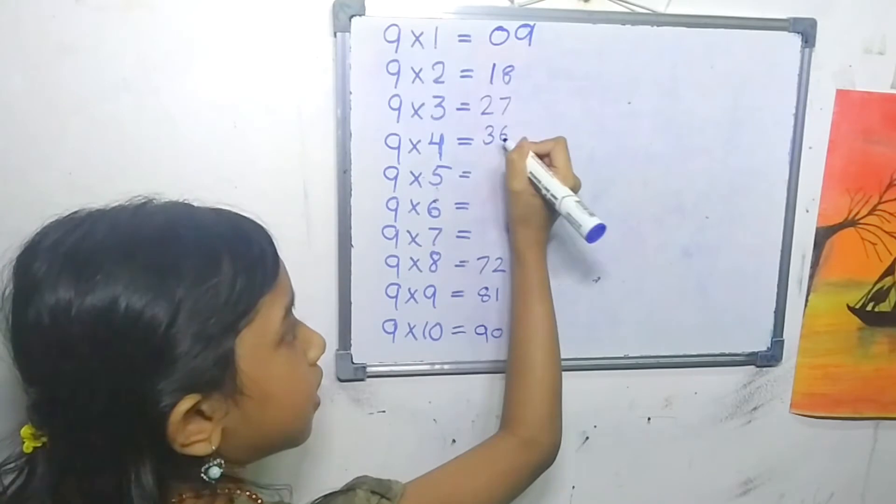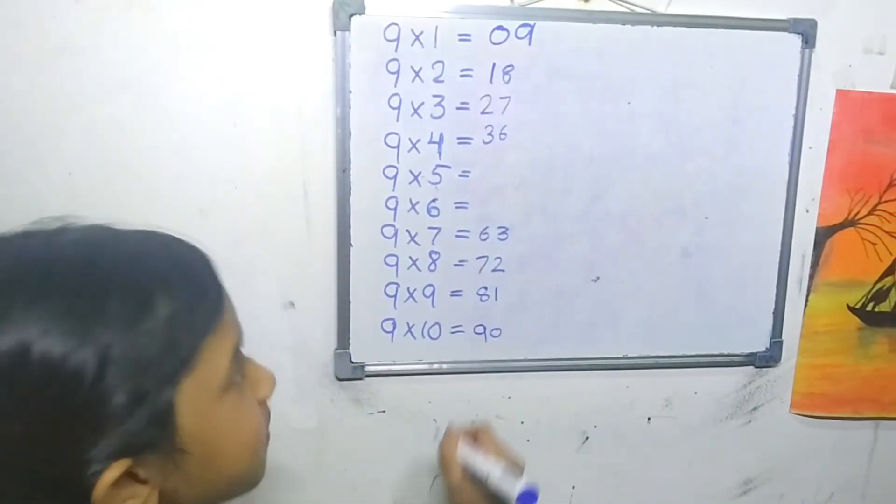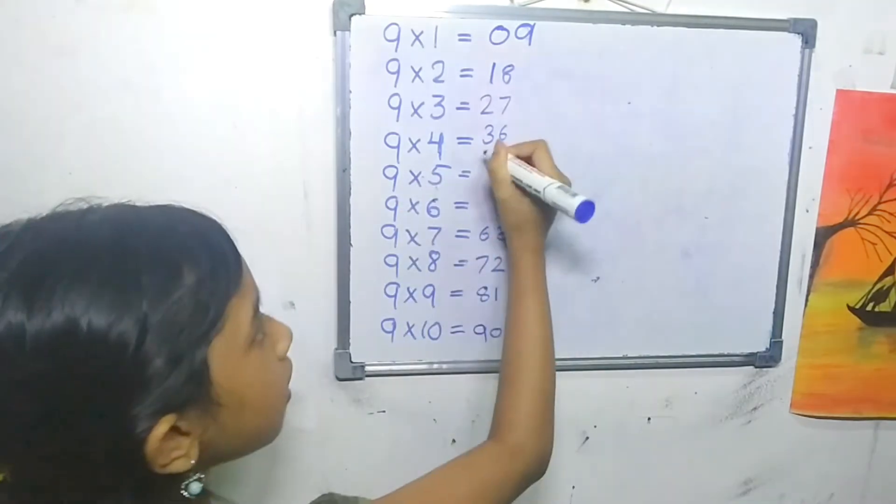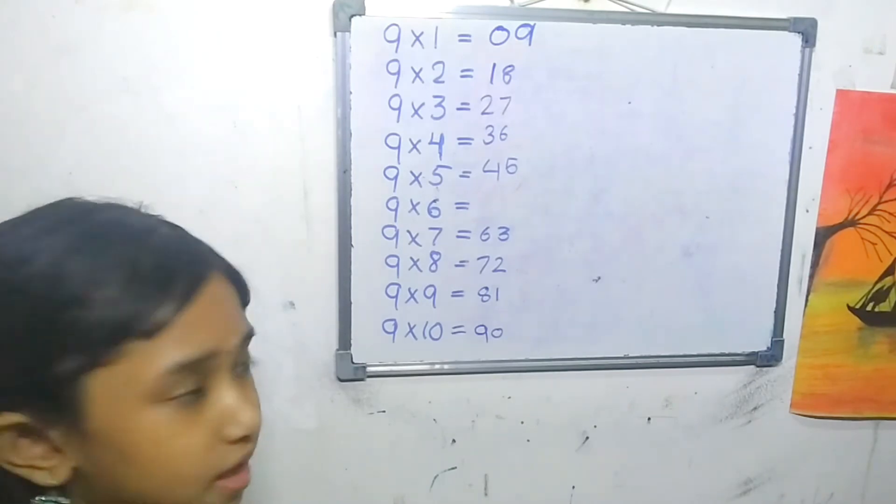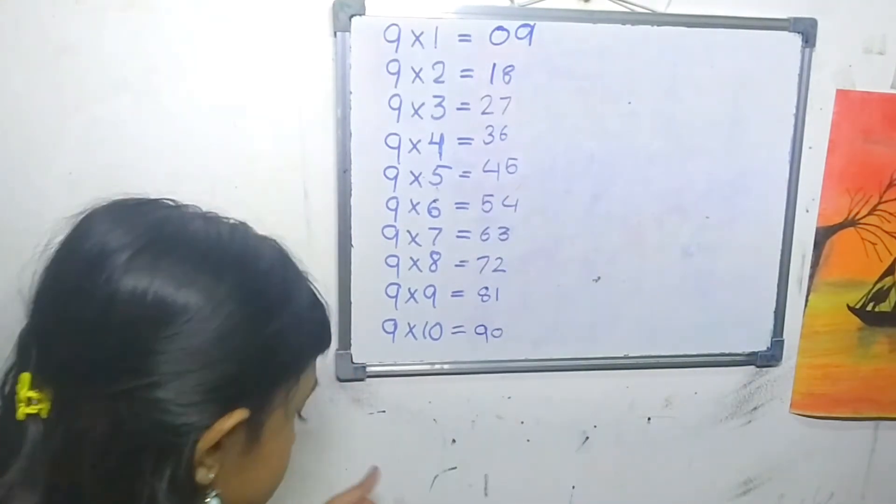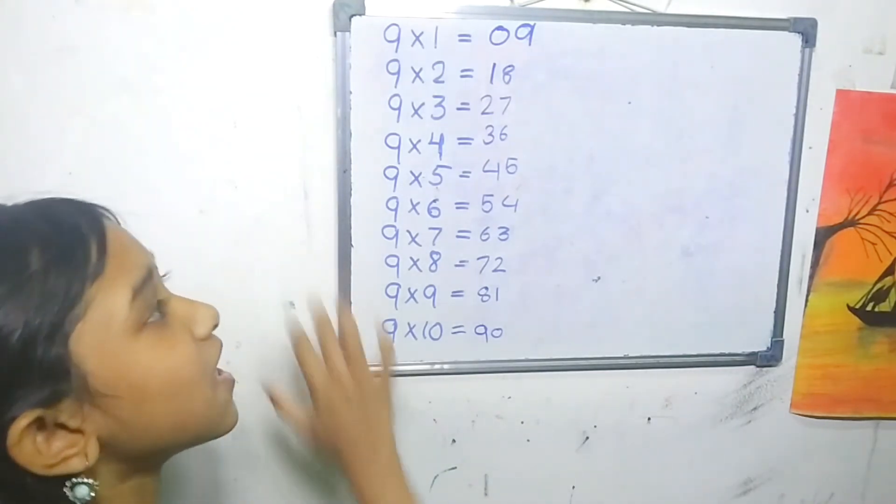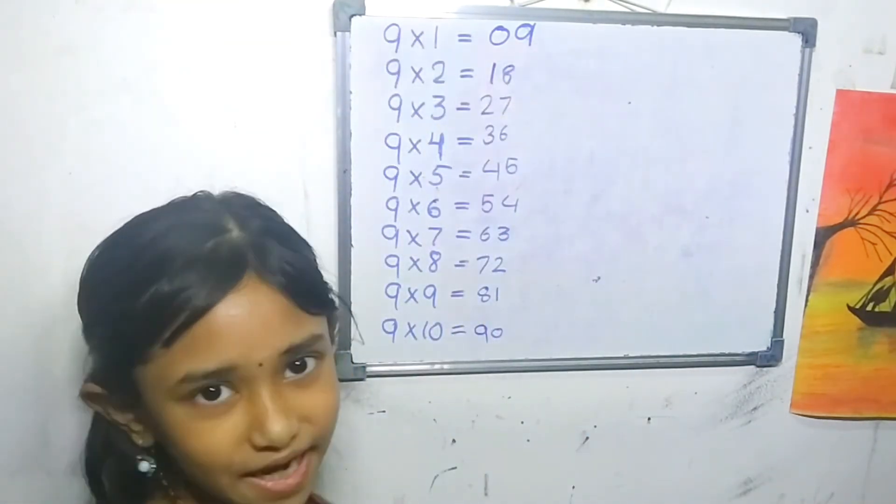Then 9 times 7 is 63. Then 9 times 5 is 45. Then 9 times 6 is 54. So we got all the multiplication table of 9.